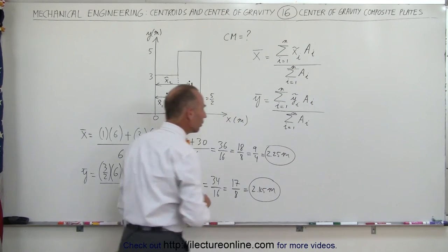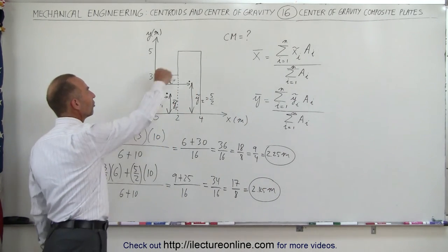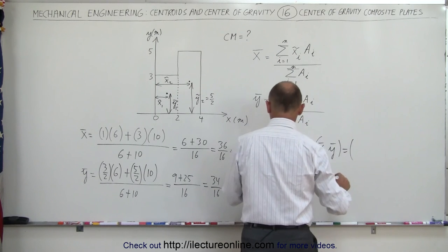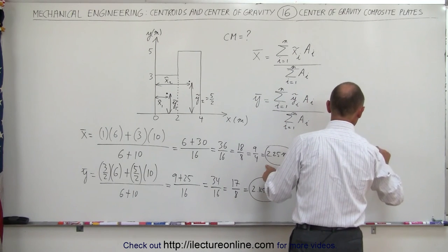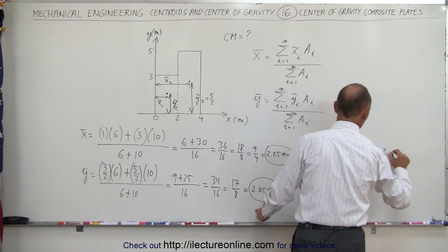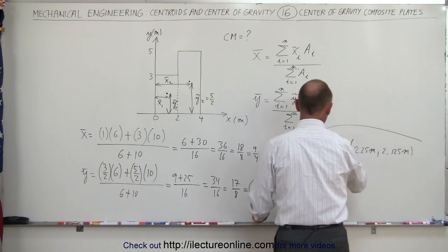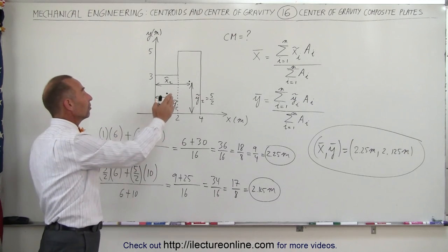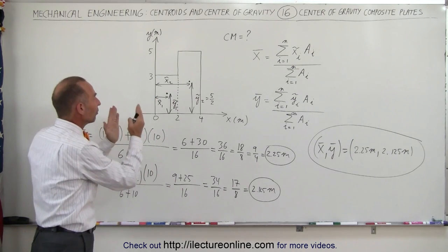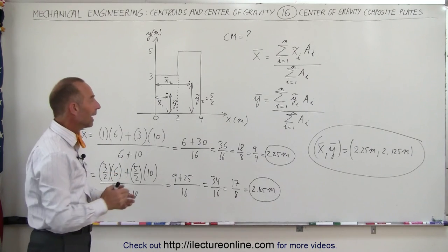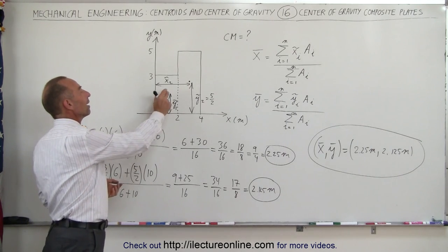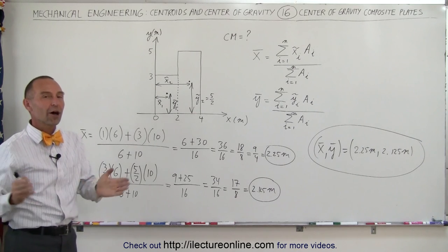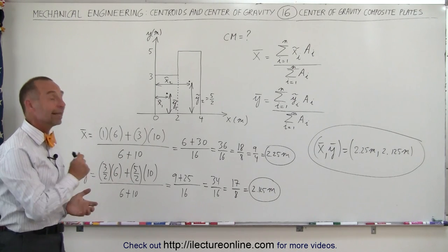The x and y coordinates of the center mass of this odd-shaped object are 2.25 meters in the x direction and 2.125 meters in the y direction. Instead of integrating complex equations, we can break the shape into individual recognizable pieces, find the center mass of each, and use this technique to find the composite center mass of the entire plate.